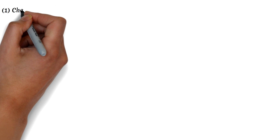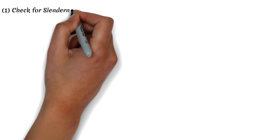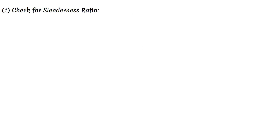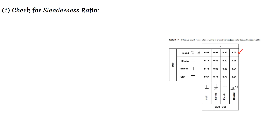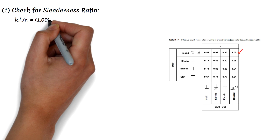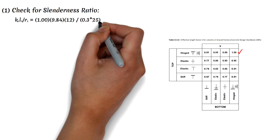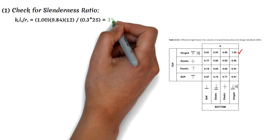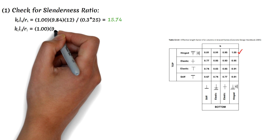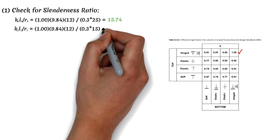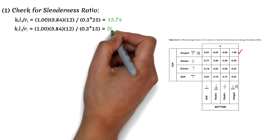The first step is to determine whether our column is a short column or a slender column. We calculate the slenderness ratio K·L over R, assuming a pin-to-pin connection so the effective length factor K equals 1.0. The radius of gyration R equals 0.3 times the depth of the column. The slenderness ratio along X equals 1.0 times 9.84 times 12 divided by 0.3 times 25, giving 15.74. Along Y, it equals 1.0 times 9.84 times 12 divided by 0.3 times 15, giving 26.24.